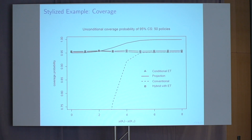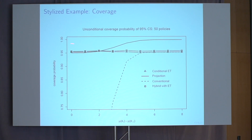To illustrate, let's go back to the simulation example, focusing on the case with 50 treatments. Looking at coverage probability — the probability that our different confidence sets cover the true effectiveness of the recommended treatment — we see that the conventional confidence interval dramatically undercovers. The projection interval has coverage right around 95% when all treatments are of similar effectiveness, but as I make one treatment much better than the others, it dramatically overcovers — coverage probability close to 100%, so it's unnecessarily conservative. Our conditional and hybrid procedures have coverage close to 95% over all parameter values considered, avoiding the big conservativeness of the projection approach.